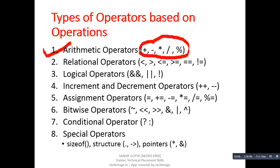Moving on to the second type, which is relational operator. Here, total six symbols are available: less than, greater than, less than equals to, greater than equals to, double equals to, and not equals to. All these operators are used to compare two entities.